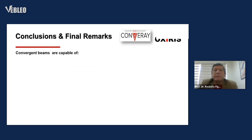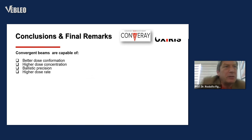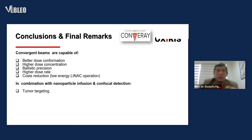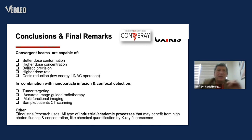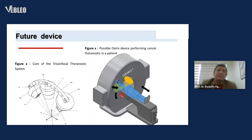Conclusions and final remarks: convergent beams are capable of better dose conformation, high dose concentration, spatial precision, high dose rate, and cost reduction at lower energy. In combination with nanoparticle infusion and confocal detection: tumor targeting, accurate imaging, image-guided radiotherapy, and multifunctional imaging. Applications include patient CT scanning and other industrial research — all types of industrial and academic processes that might benefit from high photon fluency and concentration, like chemical quantification by X-ray processes. Future device: core for a triconfocal theranostic system and possible OXIRIS-performing cancer theranostics for patients.